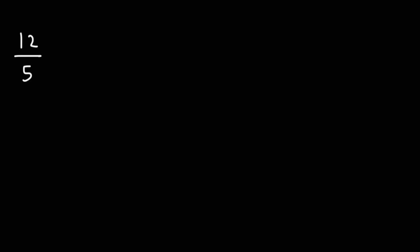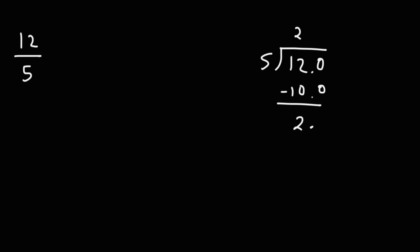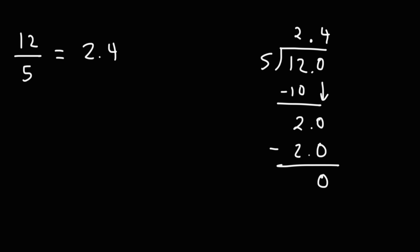For the next example, what we have here is an improper fraction, so we're going to get a value greater than 1. Go ahead and try this problem. We're dividing 12 by 5. 5 goes into 12 two times — 5 times 2 is 10. 12 minus 10 is 2. 5 doesn't go into 2, so we're going to add a decimal point and bring down a 0, making this 2.0. We treat this as 20. 5 goes into 20 four times, 5 times 4 is 20, and we get a remainder of 0. Therefore, 12 over 5 is equal to 2.4 as a decimal.